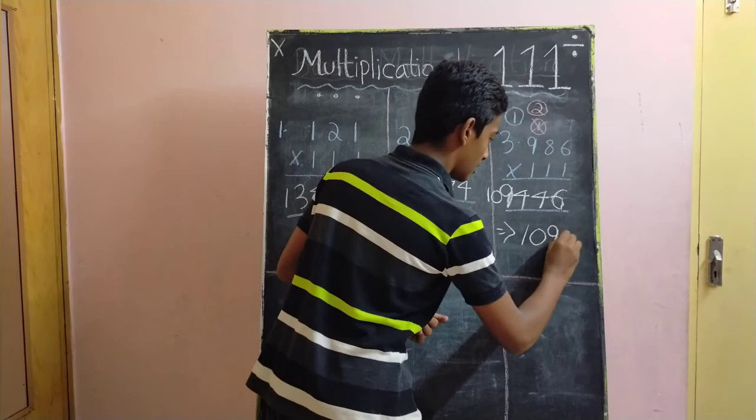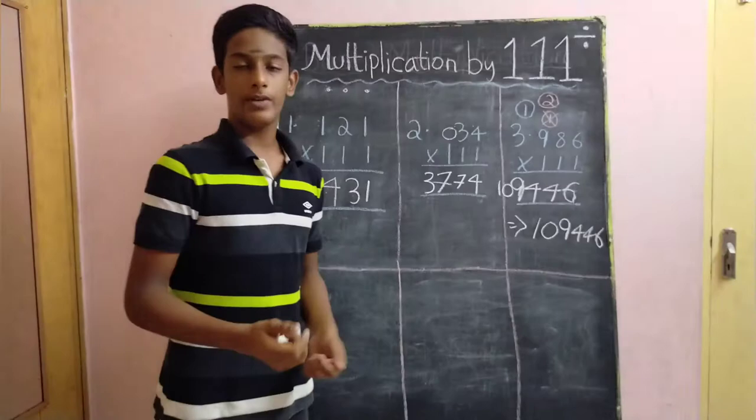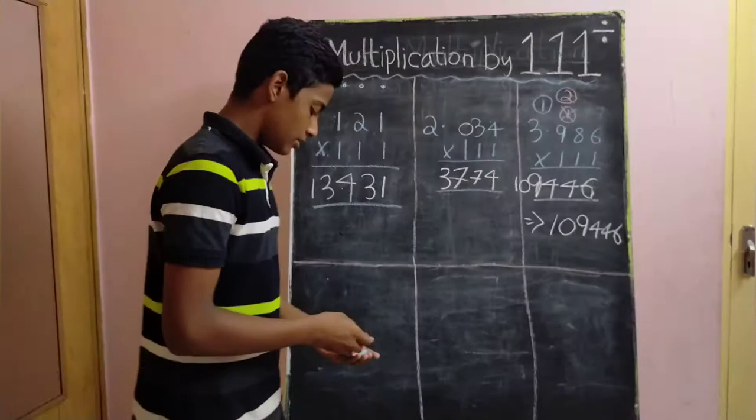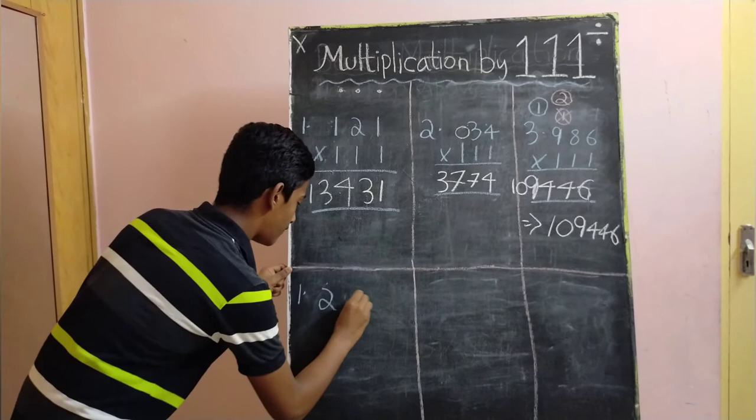Now, let's look at some 3 sums which, if possible, you can work at home and leave the answer below in the comments box. Let our first question be 251 into triple 1.